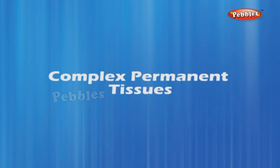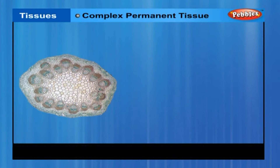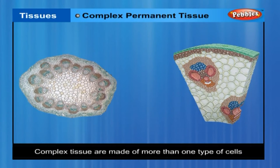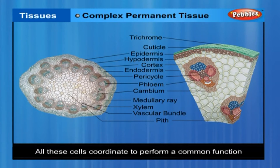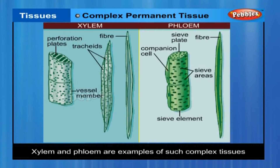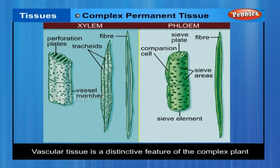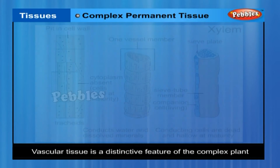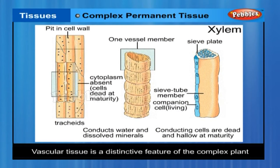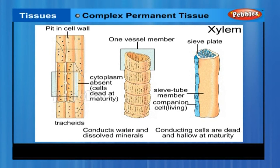Complex permanent tissue. Complex tissues are made of more than one type of cells. All these cells coordinate to perform a common function. Xylem and phloem are examples of such complex tissues. They are both conducting tissues and constitute a vascular bundle. Vascular or conductive tissue is a distinctive feature of complex plants, one that has made possible their survival in the terrestrial environment.